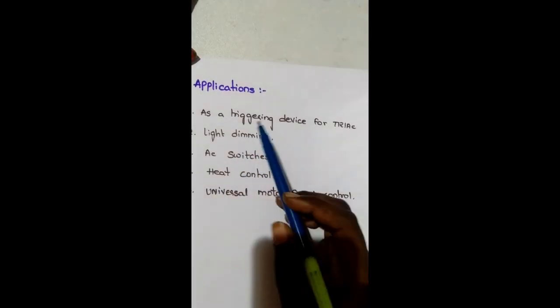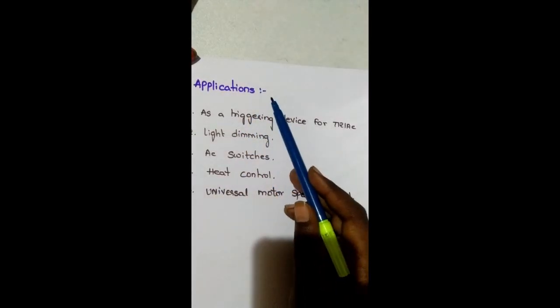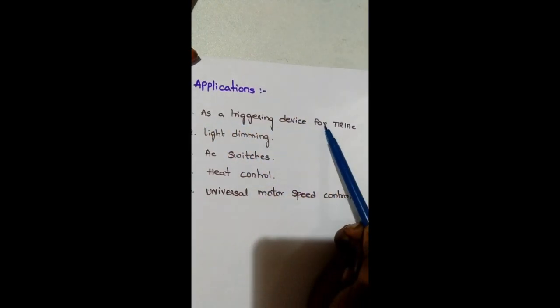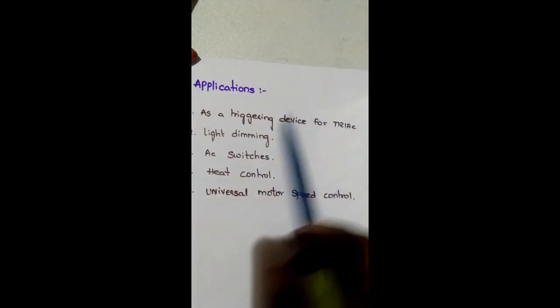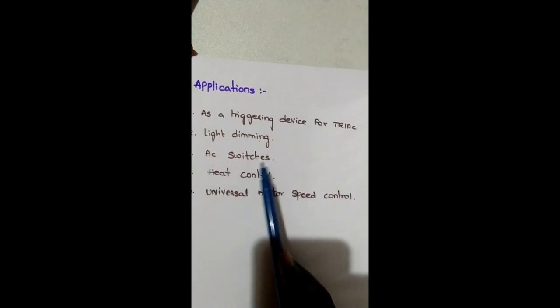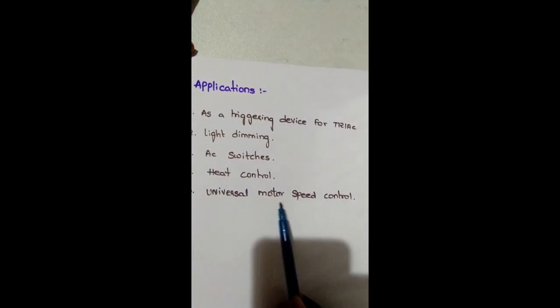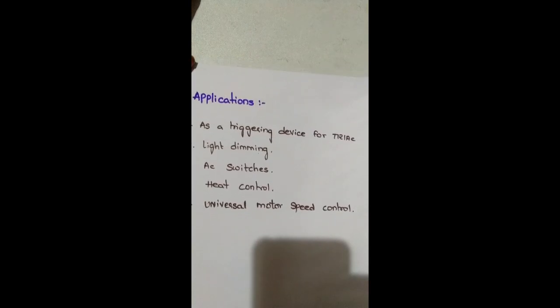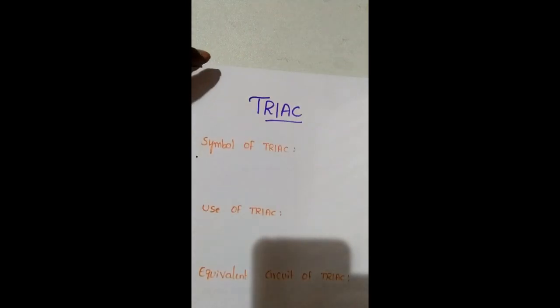When the voltage increases beyond the breakover voltage, the current increases rapidly. The DIAC is a bi-directional device and can conduct in both directions. Applications of DIAC include: triggering device for TRIAC, light dimming circuits, AC switches, heat control circuits, and universal motor speed control.